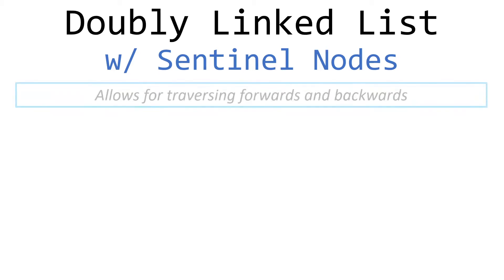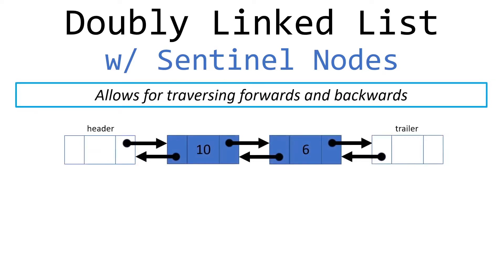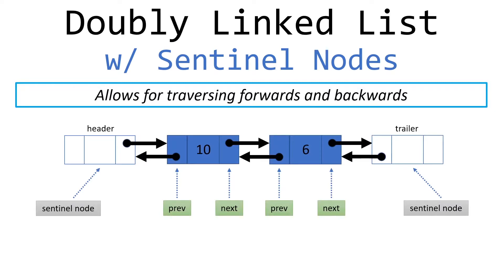What is a doubly-linked list? It basically allows for traversing forwards and backwards in a linked list. A singly-linked list only allowed you to traverse forwards because it held a reference only to the next node in the list, not the previous. A doubly-linked list has a reference to the next node and the previous, so there are three total references per node: one to the value it's holding, one to the next reference, and one to the previous.